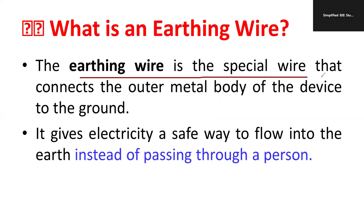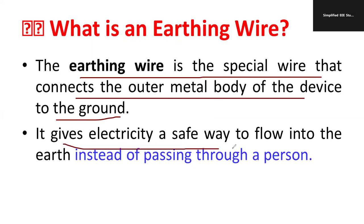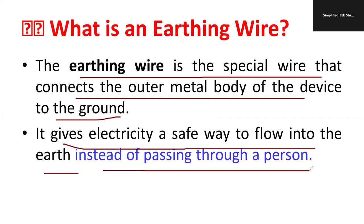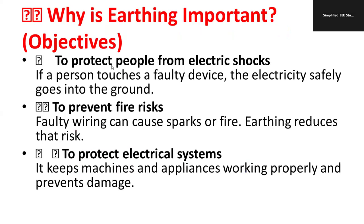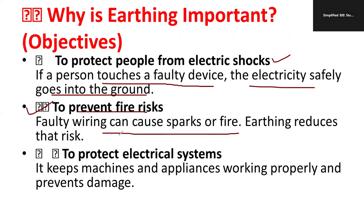The earth wire is a special type of wire that connects the outer metal body of the device to the ground, ensuring personal safety. It gives electricity a safe path to flow into the earth instead of through a person. The major objectives of earthing are: first, to protect people from electrical shock; second, to prevent fire risk, as faulty wiring can cause sparks; and third, to protect the electrical system and keep machines and appliances working properly.